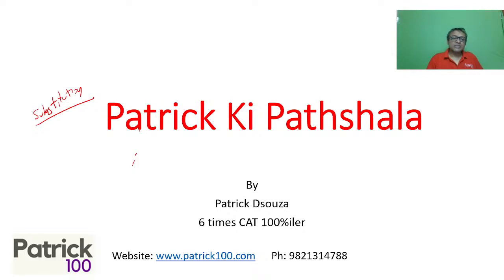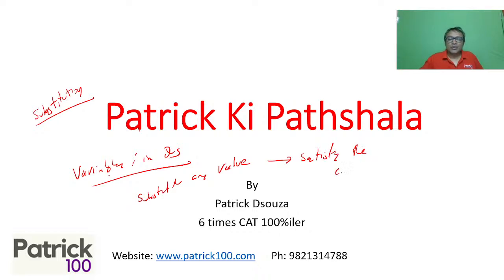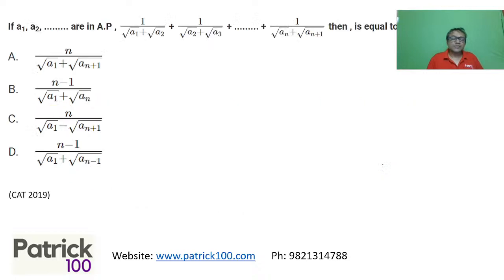Today's focus is substitution — where we substitute values. These are normally used when you have variables in the questions. If you have variables like a, b, c, x, y, you can substitute any value, as long as it satisfies the given constraint. Normally there is one such question in every paper, and if you know the technique it helps you solve things faster. Let's look at a CAT 2019 question.